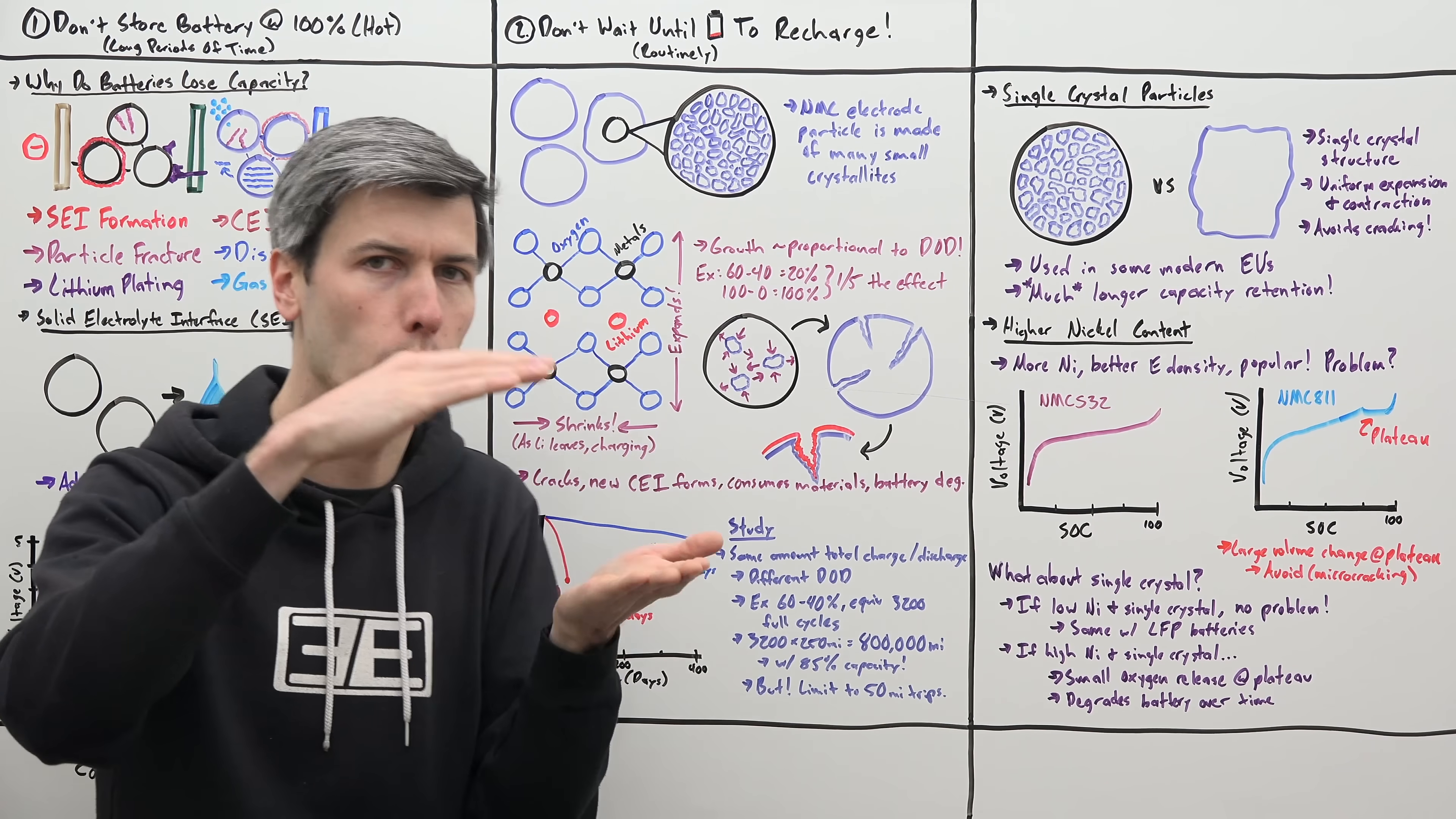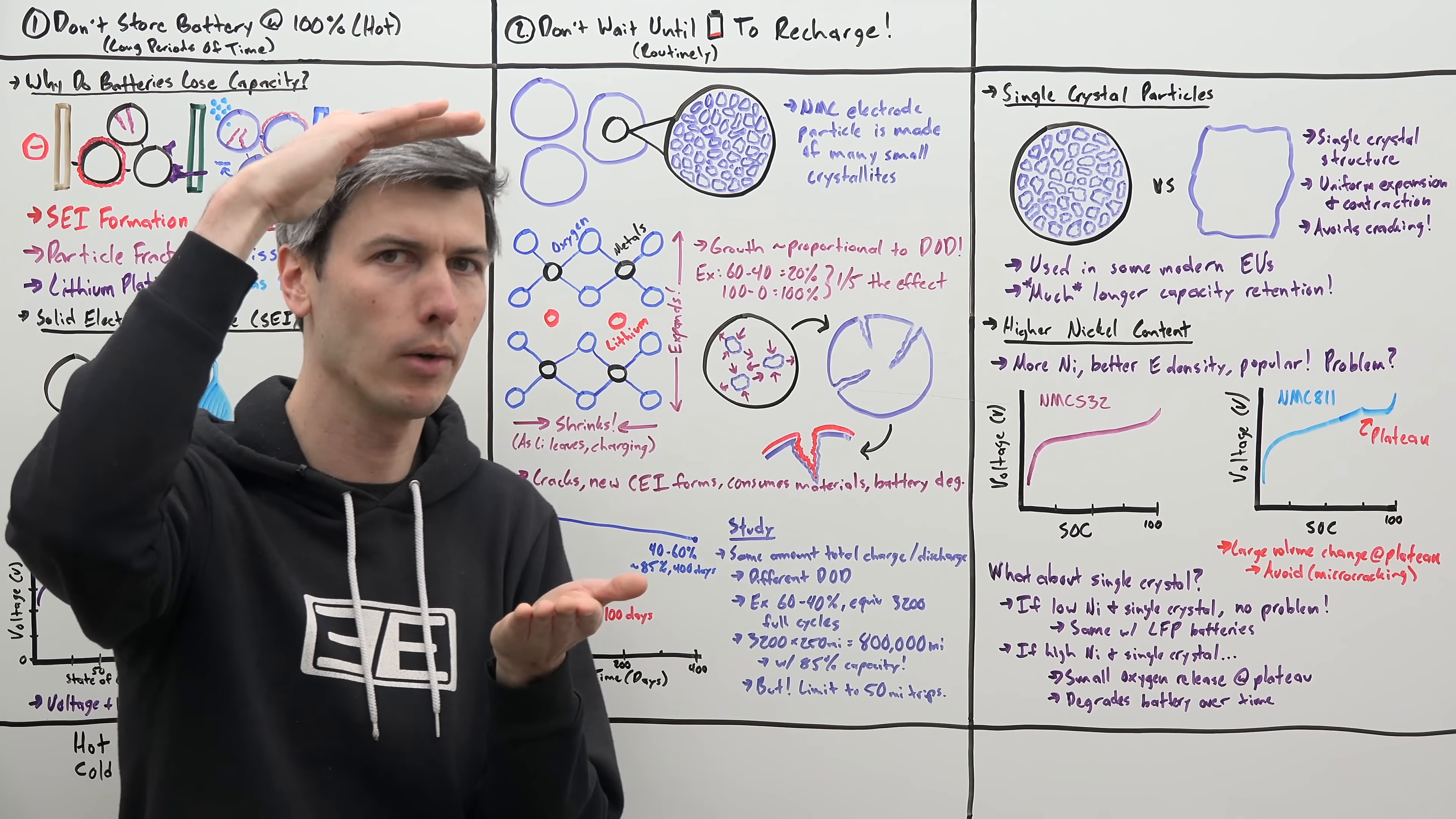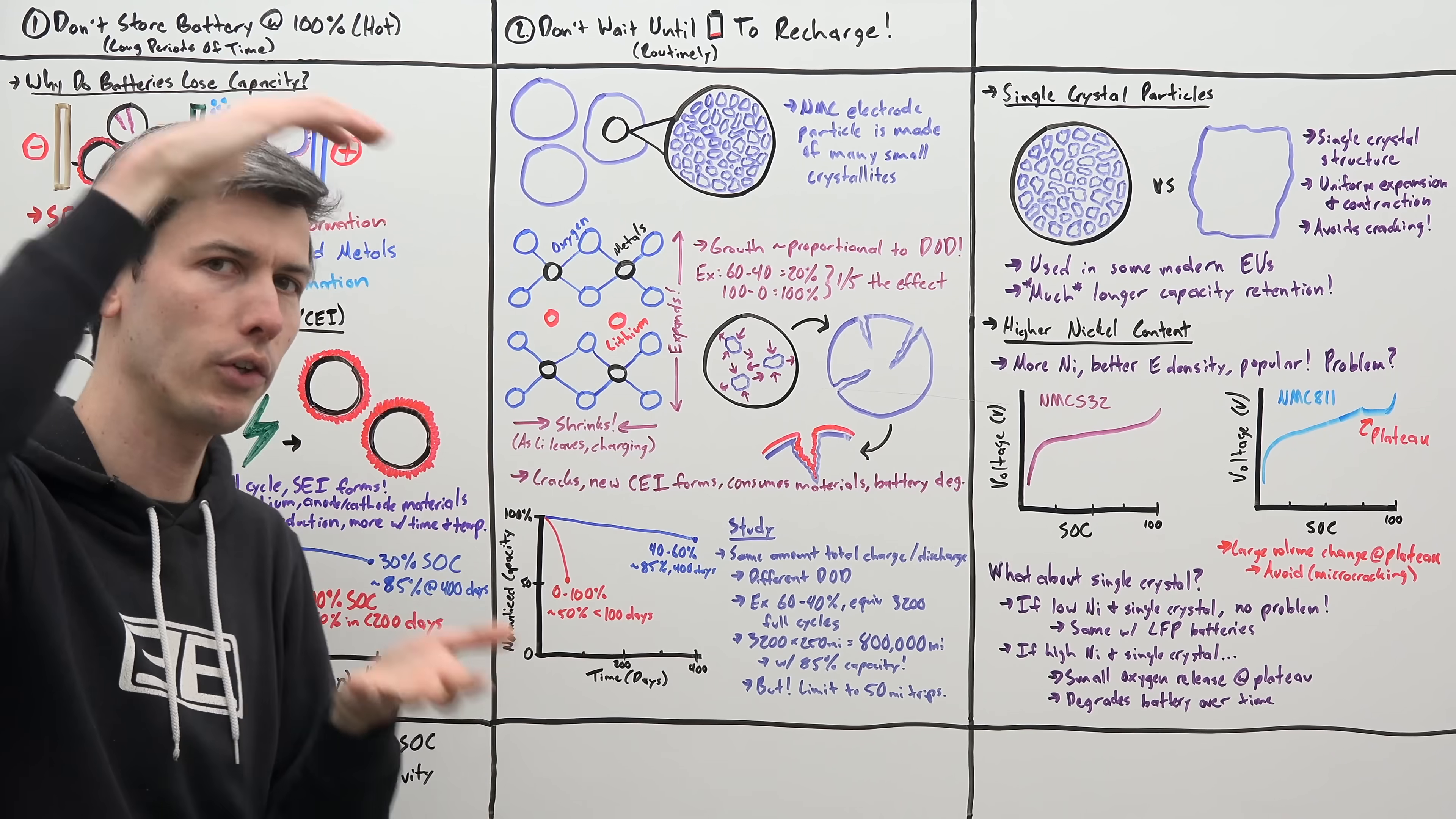if you're just going from 40% to 60%, well you're going to have a bunch of small charges. Versus if you're going from 0% to 100%, you're going to have fewer charges but the same amount of energy because you're using the whole battery.